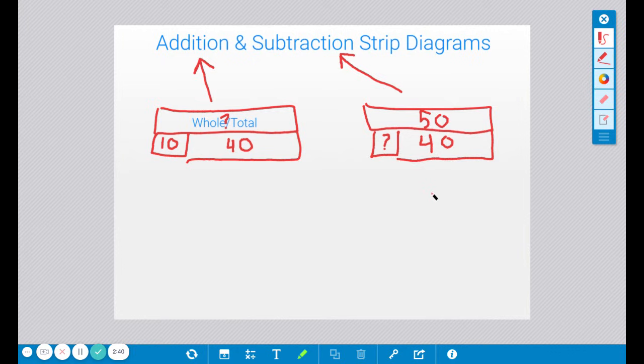So that is how you can determine if a strip diagram is for addition or for subtraction. Again, in addition, you have the parts, but you're missing the whole. See the question mark? In subtraction, you're given the whole or the total, but you're missing a part. You don't have both parts because you're not composing, you're decomposing, you're taking apart. That is how you can determine the difference between an addition and subtraction strip diagram.